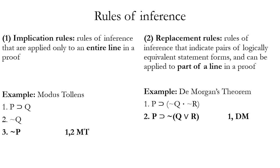Replacement rules differ from implication rules in that they can be used either on part of a line or a complete line in a proof. Implication rules allow you to go from one or more premises to a conclusion, while replacement rules allow you to replace parts of an existing proposition — either part or the whole. As an example, let's look at DeMorgan's theorem.